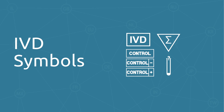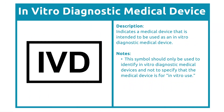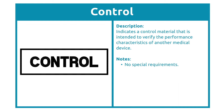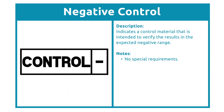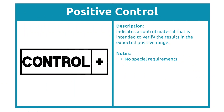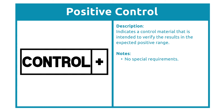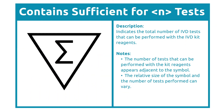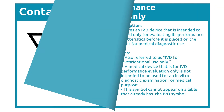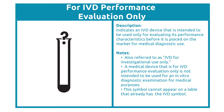IVD symbols are specifically used on in vitro diagnostic devices and communicate information germane to those product types. The IVD symbol identifies in vitro diagnostic devices — there is an important distinction between IVDs and medical devices. The Control symbol identifies devices used to verify the performance of another medical device. The negative control symbol identifies control material intended to verify results in the expected negative range, while the positive control symbol identifies material intended to verify results in the expected positive range. Another symbol indicates the maximum number of tests that can be performed with the IVD kit. A separate symbol is seen on IVD devices used for investigational purposes and cannot appear on a label that also has the IVD symbol, as it is not intended for medical use.